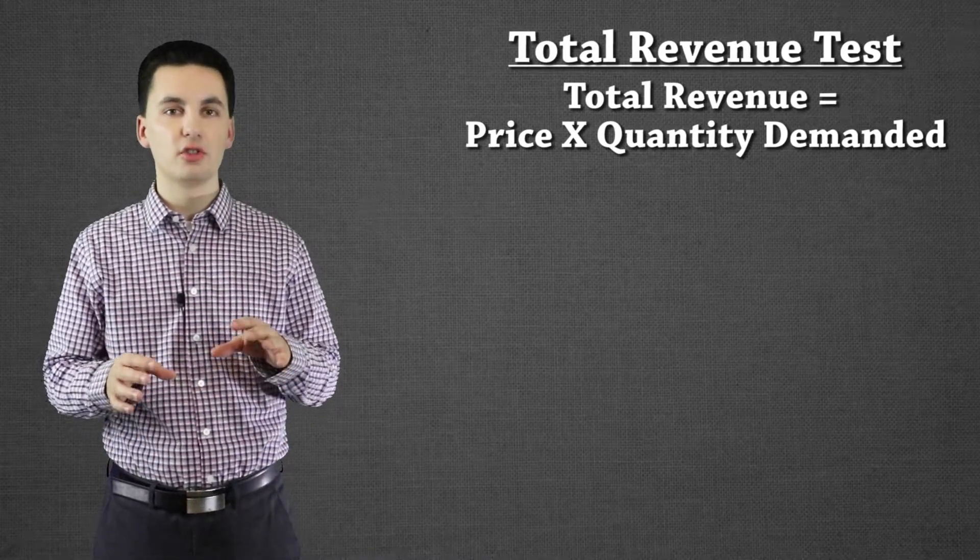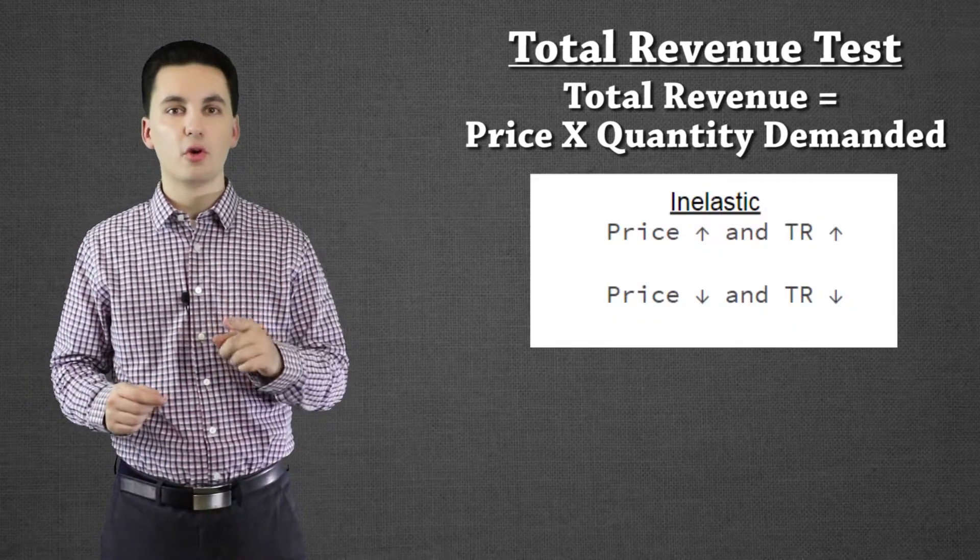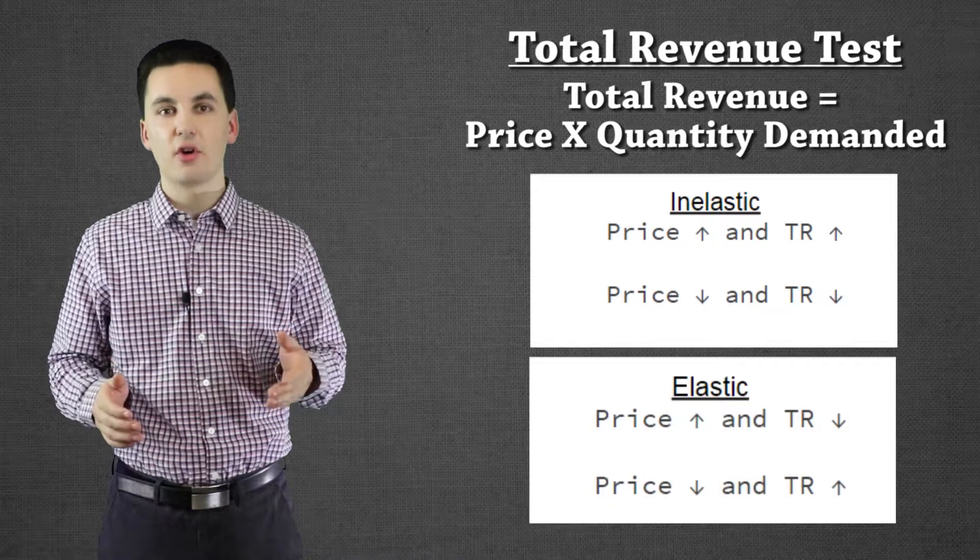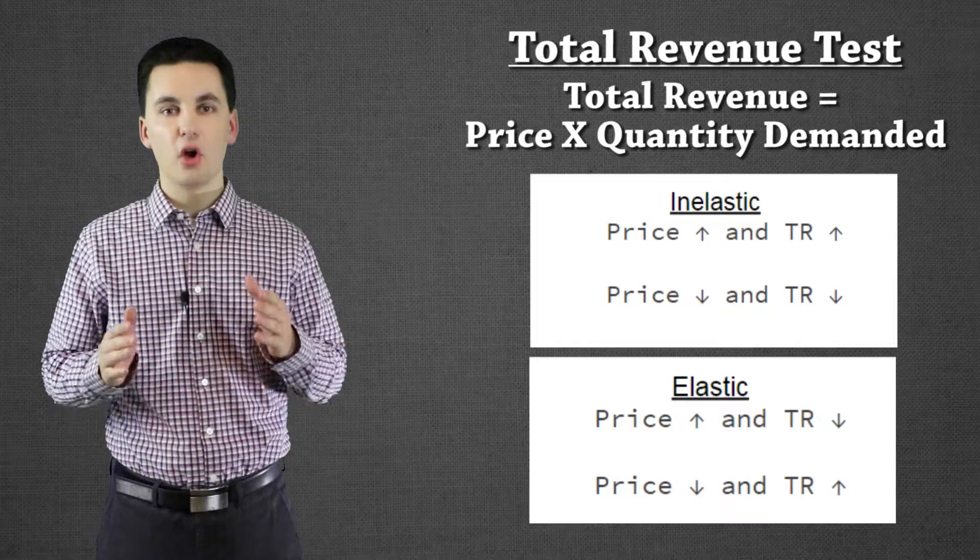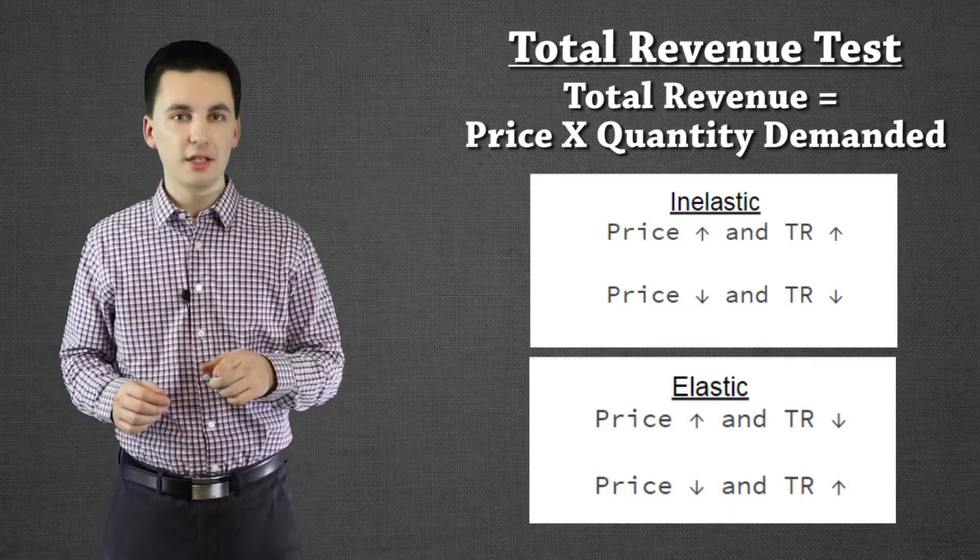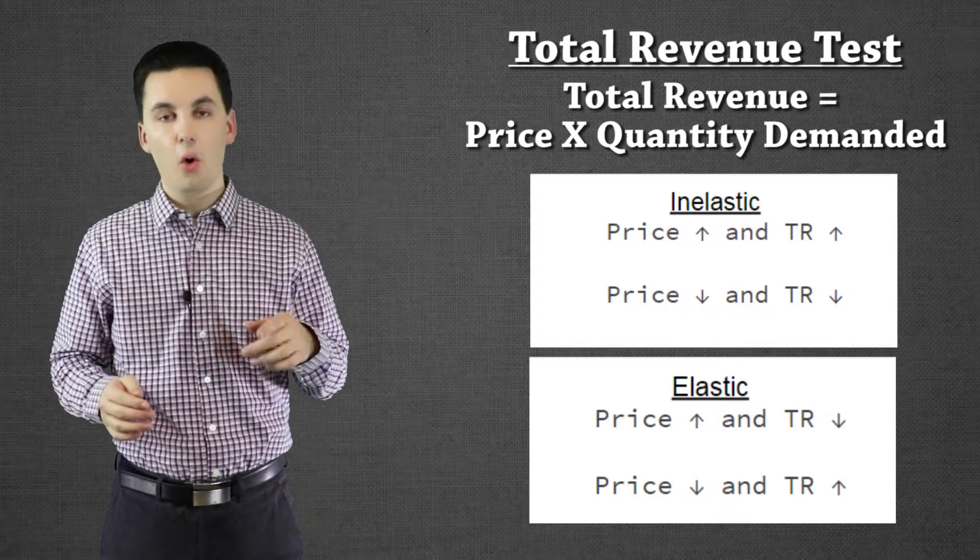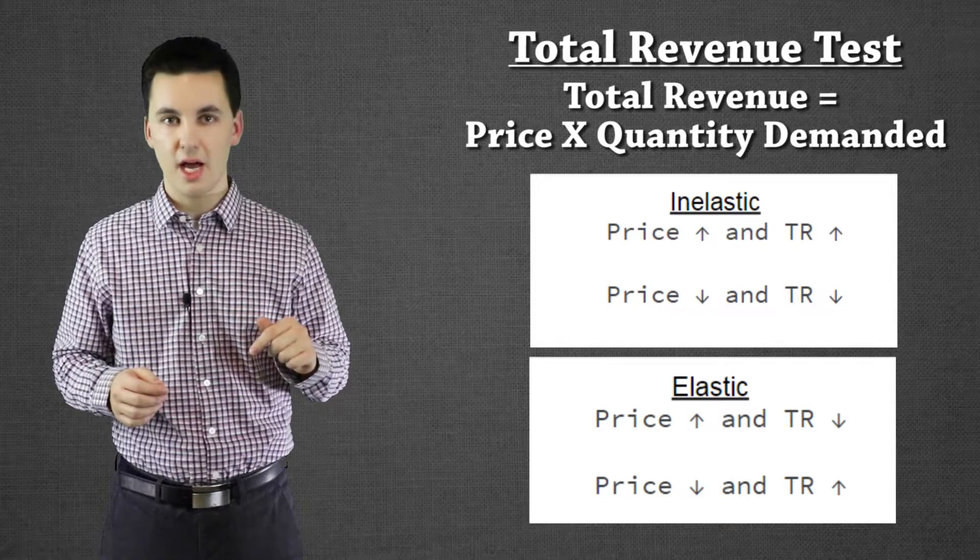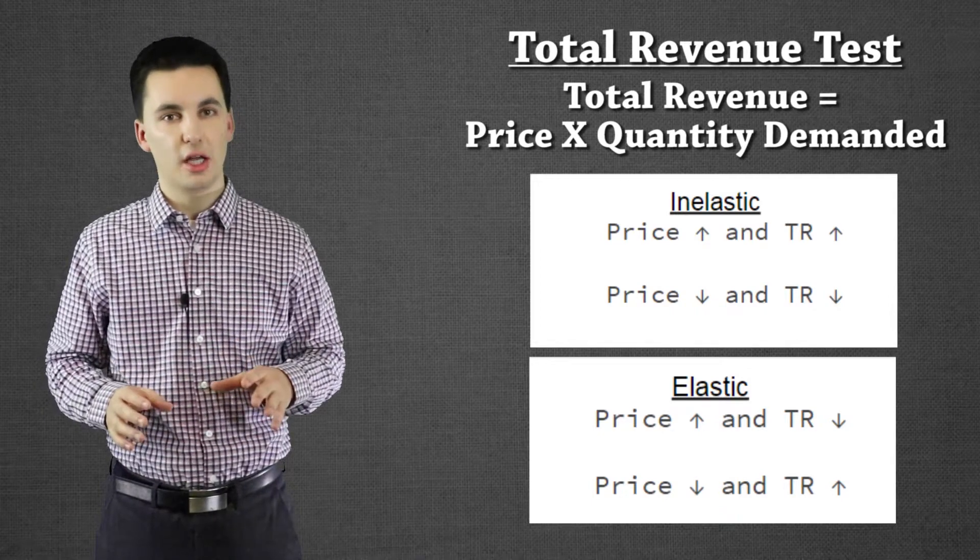Whenever our price goes down and our total revenue goes down, we're going to have an inelastic demand. At the same time if our price goes up and our total revenue goes up it's going to be inelastic. It's always inelastic when they go together. And it's always going to be elastic when we see our price go up and then all of a sudden our total revenue go down. Or if our total revenue goes up that's going to mean that our price is going down. With elastic they're always going to be opposite.